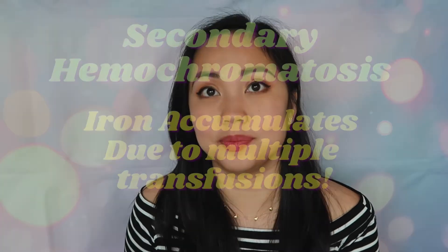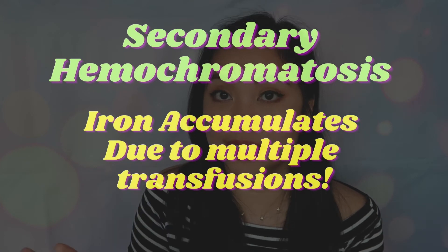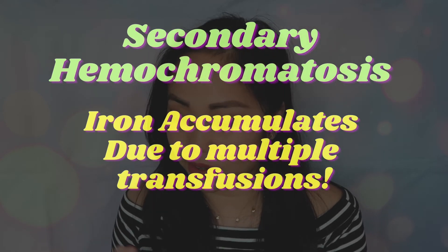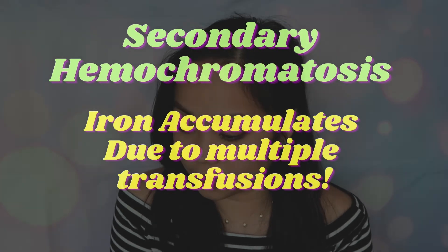In secondary hemochromatosis, the patient is being treated for other hemolytic anemias and is being transfused regularly. Because of these transfusions, the body does not need to make hemoglobin and cannot utilize the iron, resulting in an excess of iron and hemochromatosis. Iron overload from transfusion therapy is treated by chelation therapy with desferioxamine.